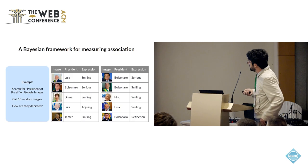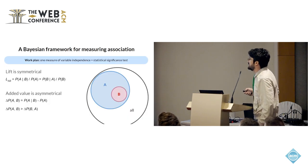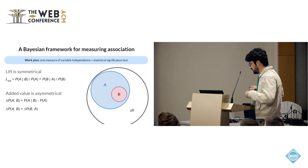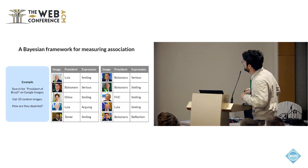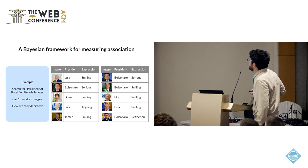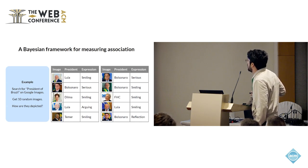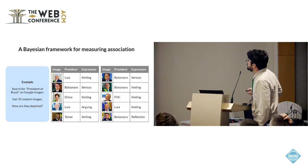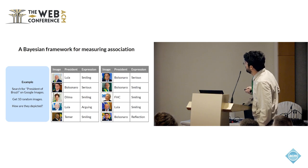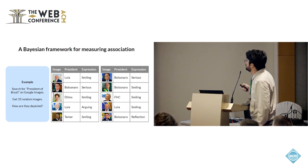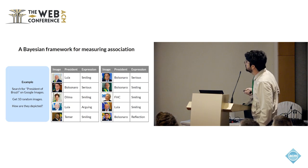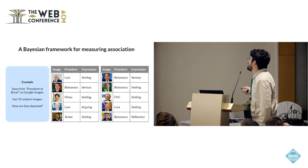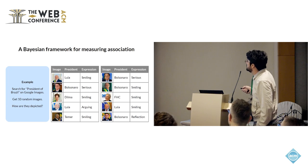For the statistical test, you could use a Z-test or something similar, but I'll use Bayesian testing because I believe it's the best approach. As an example: suppose you search for 'president of Brazil' on Google Images, get 10 random images, and want to answer how they are depicted. I actually did a little fudging on the selection to show the advantages of the method more clearly.